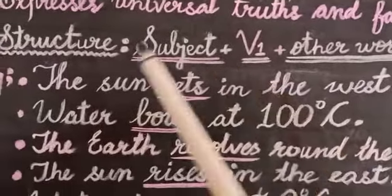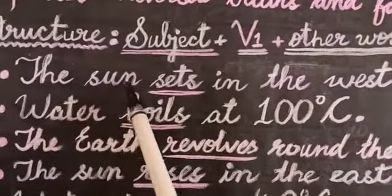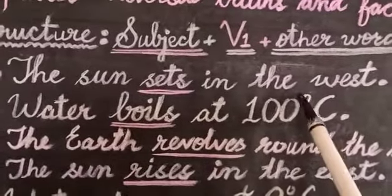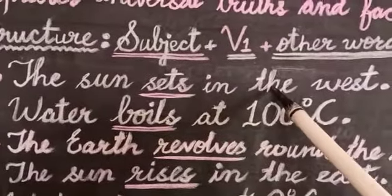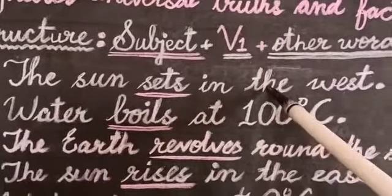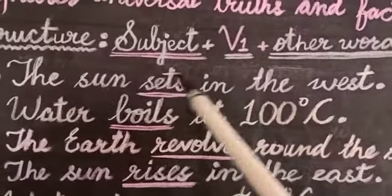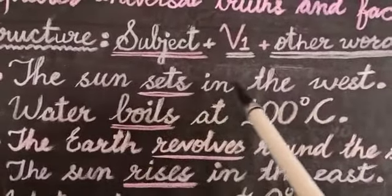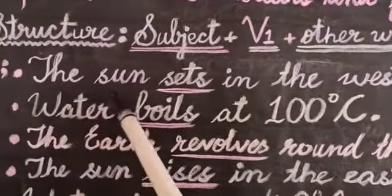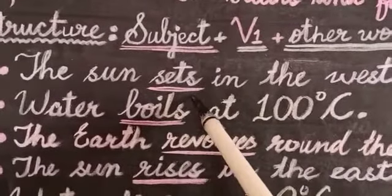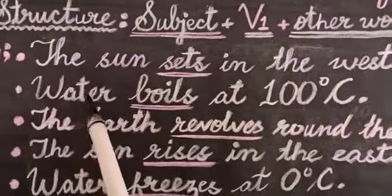Let's go through some examples. The sun sets in the west. It is a universal truth — this statement has universal acceptance and universal validity. All the people of the world believe that the sun sets in the west. Here, 'the sun' is the subject and we have used 'sets', a singular verb.